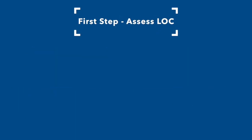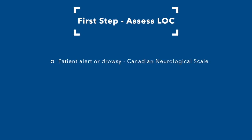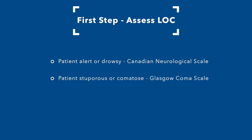The first step is to assess level of consciousness. If the patient is alert or drowsy, use the Canadian Neurological Scale. If the patient is stuporous or comatose, use the Glasgow Coma Scale.